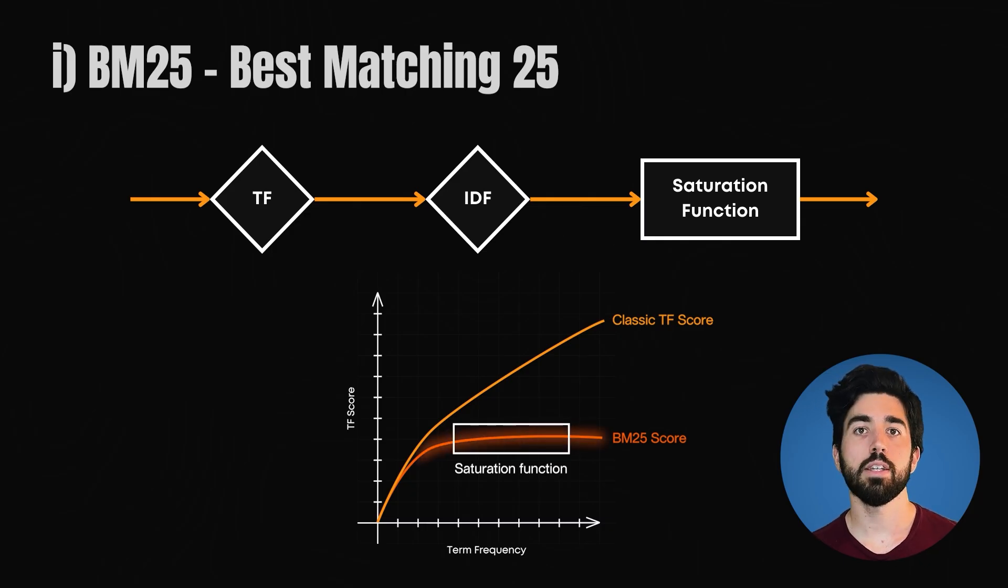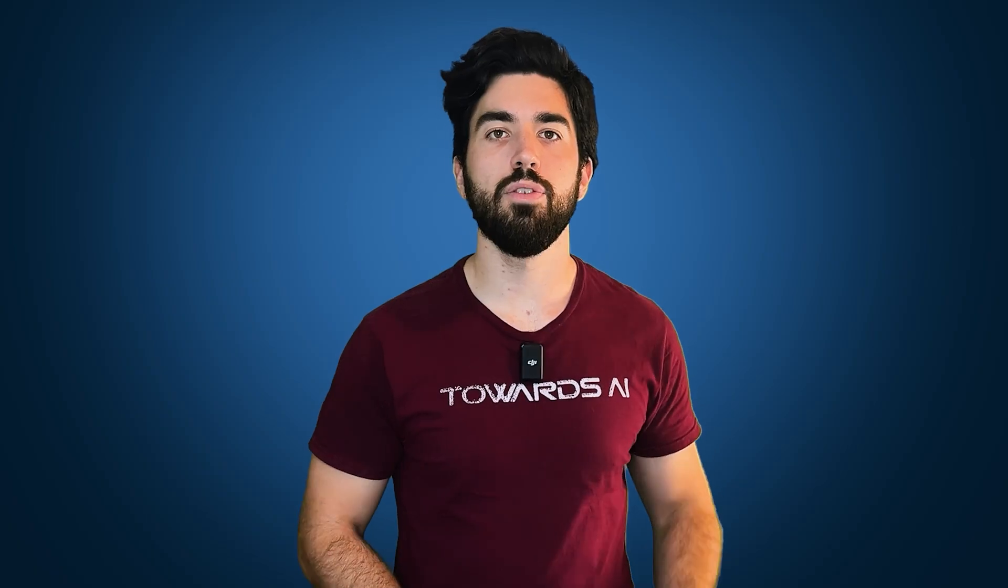This saturation function makes sure that after a certain point, like having a hundred times the same word, these additional occurrences add less and less weight to its relevant score. This helps in balancing the influence of frequently occurring words, ensuring they don't unfairly dominate the scoring process since a word appearing a hundred times isn't necessarily 10 times more relevant than if it appeared 10 times.